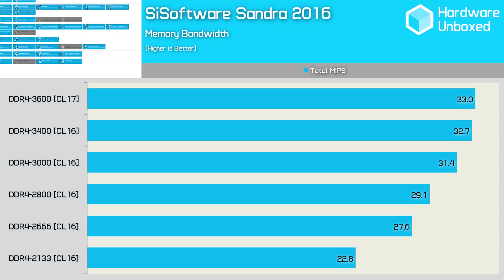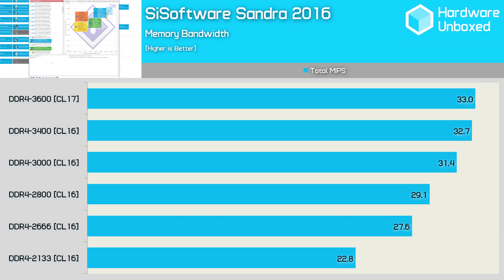The other things to consider are price and latency, the latter of which is often described as memory timings. To give a clear picture of how timings and frequency impact performance on Kaby Lake, I've done some benchmarking. Here's a quick look at the impact memory frequency has on bandwidth. Using DDR4 2133 we are limited to 22.8GB/s. Moving to DDR4 2666, bandwidth increased by 21%, and we see a further 20% bump when jumping to DDR4 3600.